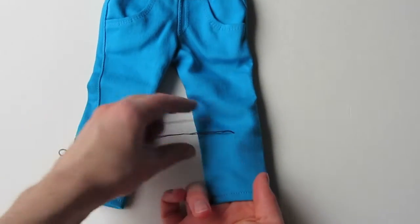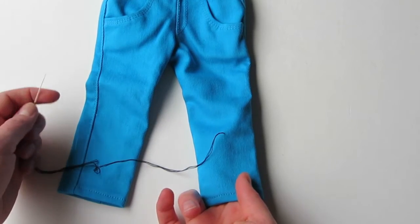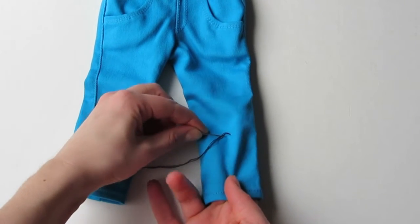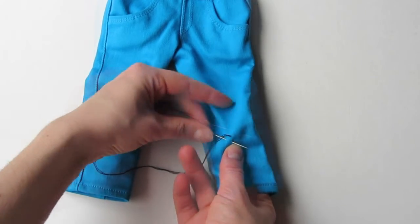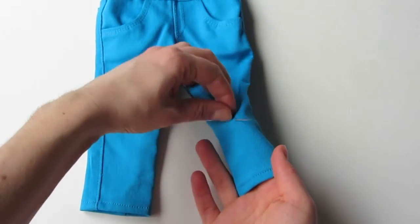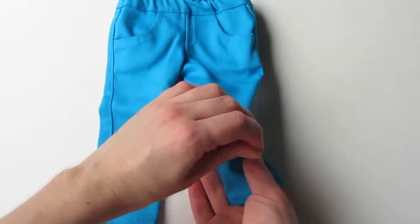To do the feather stitch, bring your thread up to the right side of one pant leg. Put your needle down next to that spot and then bring it out below the spot. Wrap your thread around the point of the needle and gently pull it through.